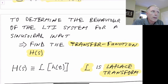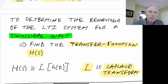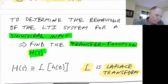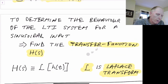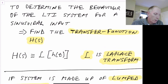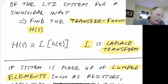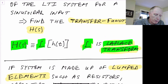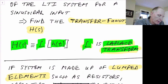For that we'll find the transfer function h of s. Here, h of s will be the Laplace transform — this L here is denoting the Laplace transform — it's the Laplace transform of the impulse response h of t. So we refer to h of s as the transfer function of our system.